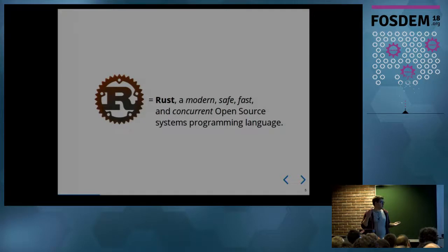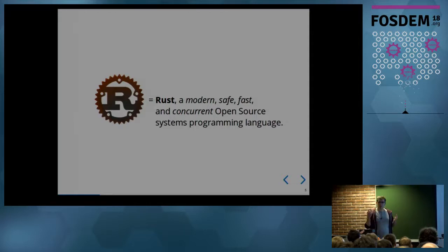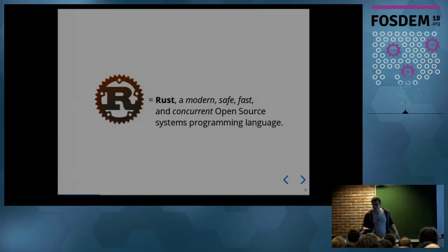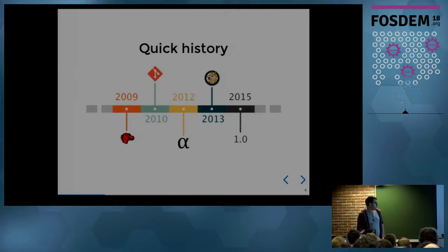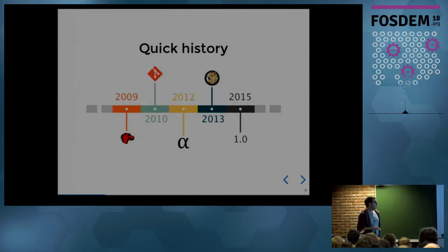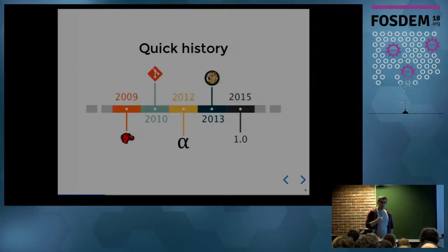So what is Rust? Rust is a modern, safe, fast, and concurrent open-source system programming language. The first goal is to write memory-safe, thread-safe code with zero-cost abstraction for systems. Graydon Hoare wrote the first Rust compiler in 2006 in OCaml — I invite you to take a look at OCaml, it's a very great programming language. It was sponsored in 2009 by the Mozilla Foundation, and in 2015 reached the first stable version. Now in 2018, we are at version 1.23 or something like that.